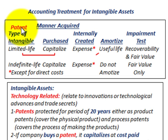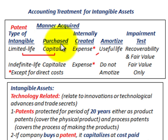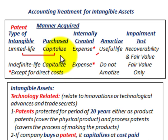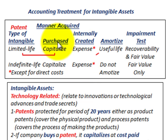We're dealing with a patent here. For intangibles, you can have either a limited life or an indefinite life on the patent. If the patent was purchased, as it is in this case, we would capitalize the purchase cost. But if it was internally developed or created, we'd be expensing it. We're going to look at the case where it's purchased.